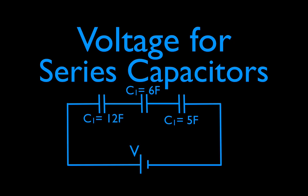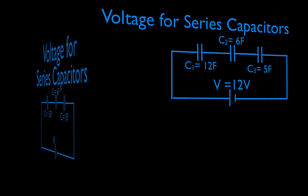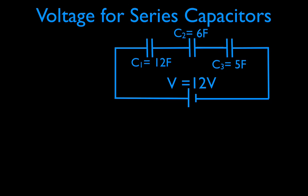Okay, in today's video I'm going to go over how to calculate the voltage for series capacitors. And this is the circuit we're going to use. We have 3 capacitors, 1, 2 and 3, a 12, a 6 and a 5 farad capacitor, a 12 volt battery. And we want to figure out what is the potential difference across these two plates? And what is the potential difference across these two plates? And what is the potential difference across these two plates?